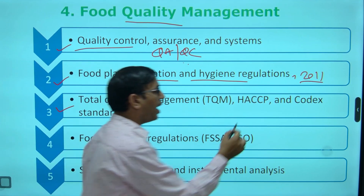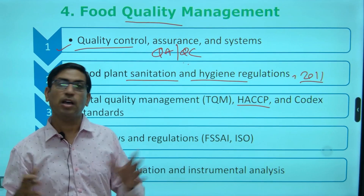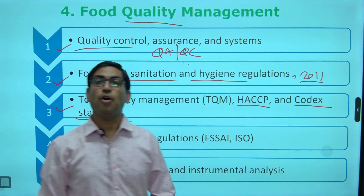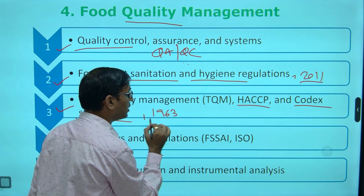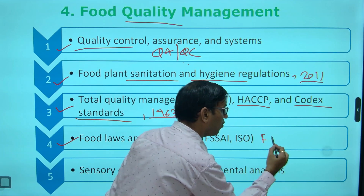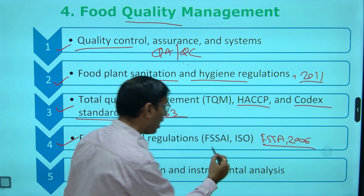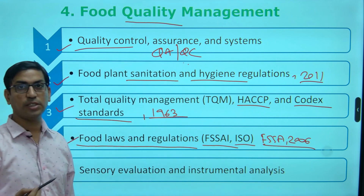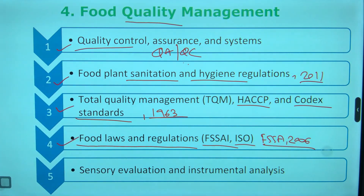Along with that, codex standards — in codex standards, horizontal and vertical committees are there. India has been part of Codex since 1963. Then food laws and regulations — first of all, the Food Safety Standard Act 2006, specific sections, FSSAI authority, ISO and all sets of international regulations. One important regulation is registration and licensing of food business — that is most important.